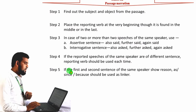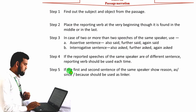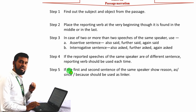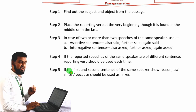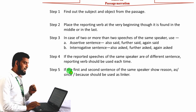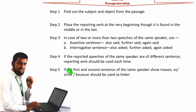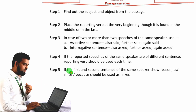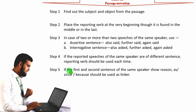Now I would like to discuss some rules on passage narration. Step 1: at first, you have to find your subject and object from the passage — that means who is the speaker and who is the listener. Step 2: you have to place the reporting verb at the very beginning, even though it may be found in the middle or at the last. That means if the reporting verb is found in the middle or last part, you have to bring it to the very beginning of the sentence.